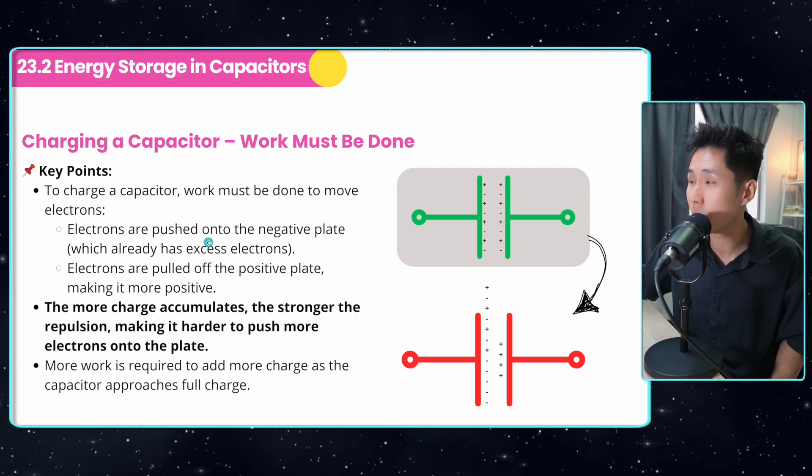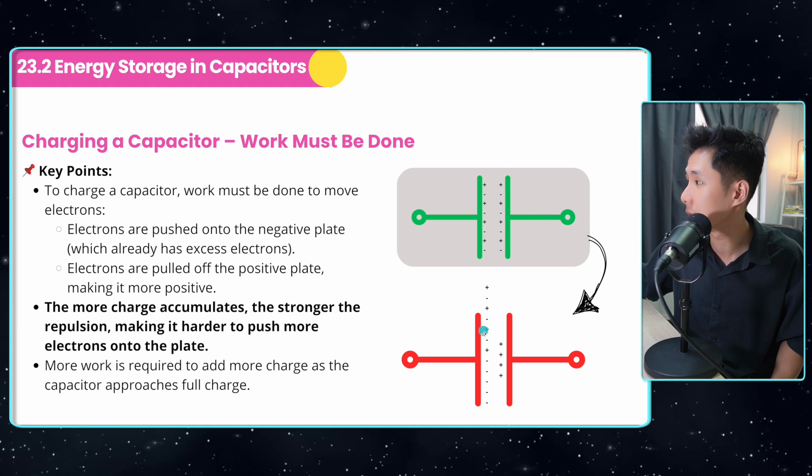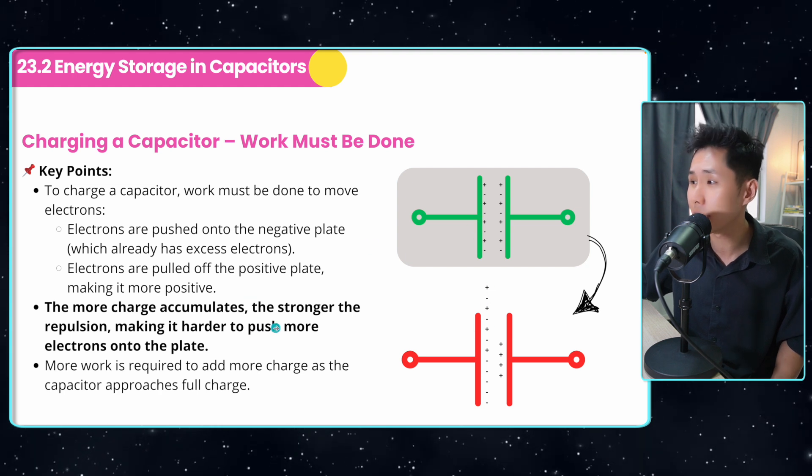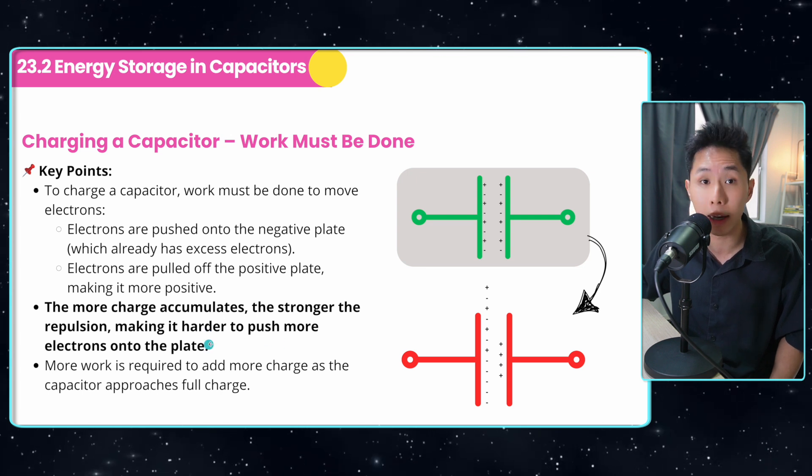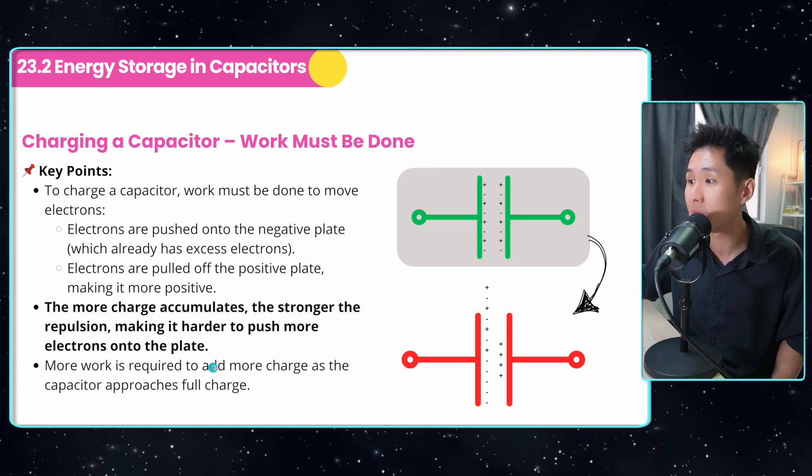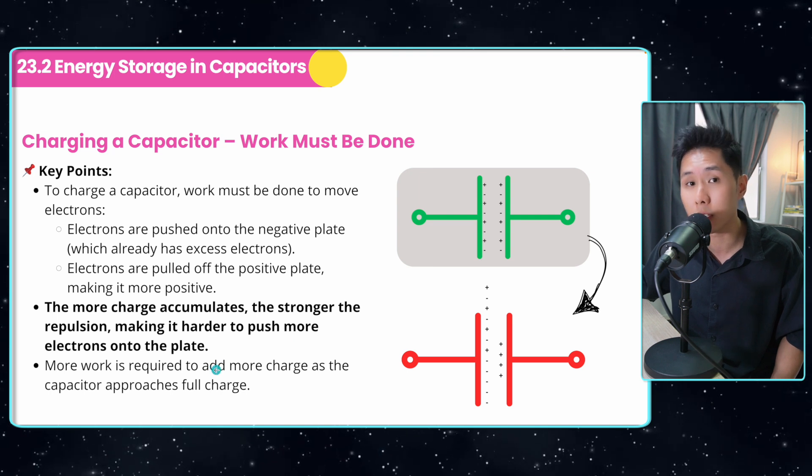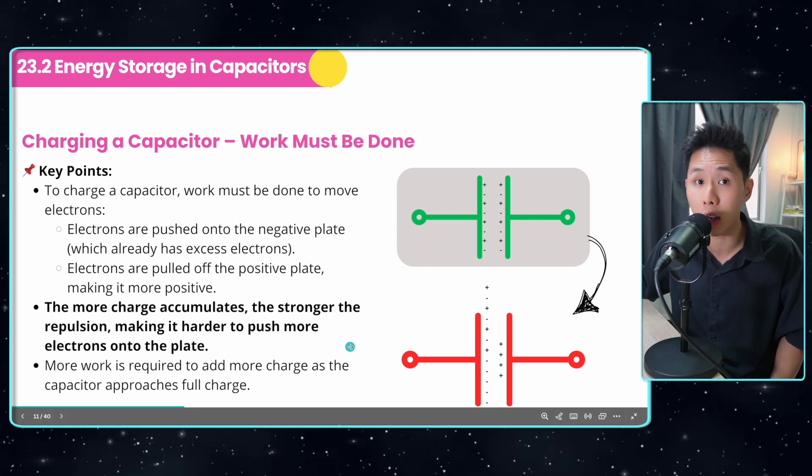So to charge your capacitor, work must be done to move electrons. So these electrons are moved into the negative plate. And then the more charges accumulate, the stronger the repulsion, making it harder to push more electrons onto the plate. In other words, as the capacitor approaches full charge, more work is required to add more charge.